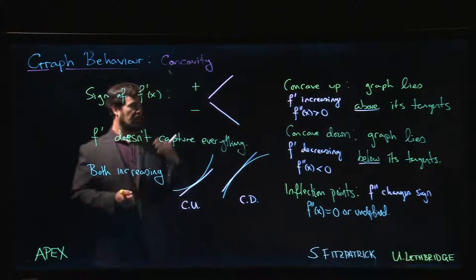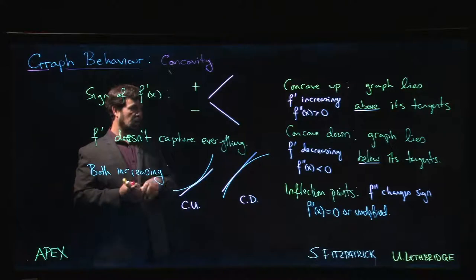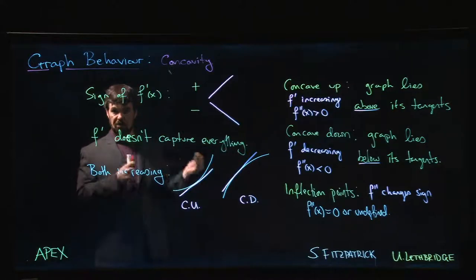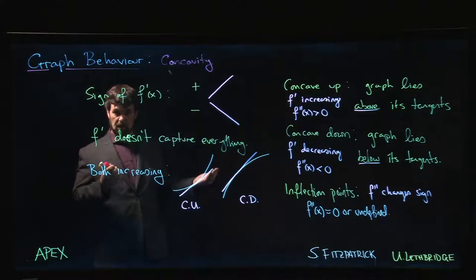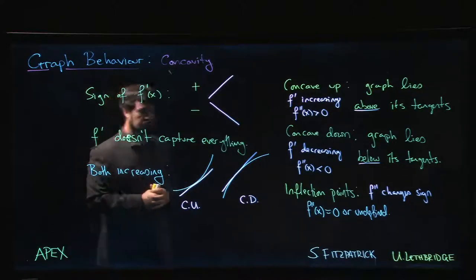When we're looking for inflection points, we're looking for points where either f double prime equals zero or f double prime is undefined. To analyze the concavity of a graph, we compute the second derivative, determine the intervals on which it's positive and negative, and then we'll be able to get this information about the graph of our function.